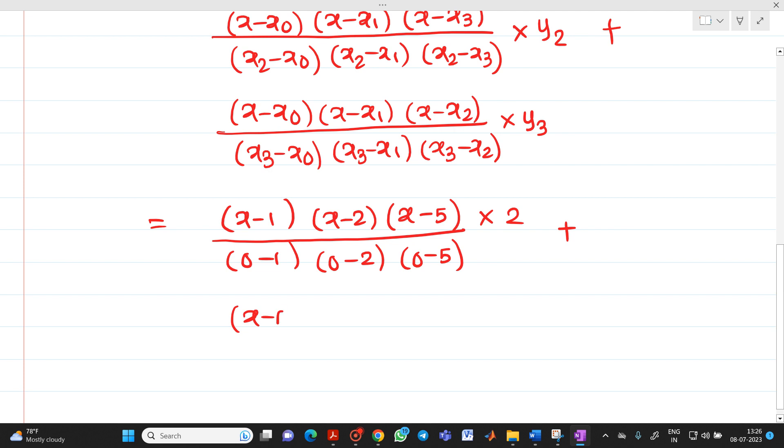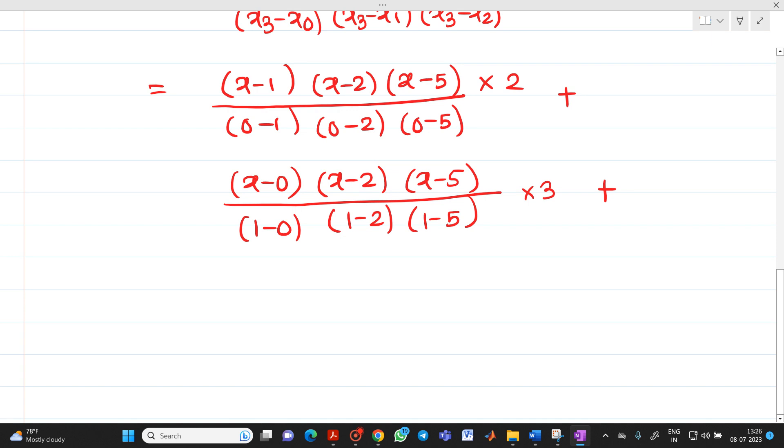x minus 0, x minus 2, x minus 5, divided by 1 minus 0, 1 minus 2, and 1 minus 5, into 3. Plus, next will be x minus 0, x minus 1, x minus 5, into 12, that will be your y2, divided by 2 minus 0, 2 minus 1, 2 minus 5, plus